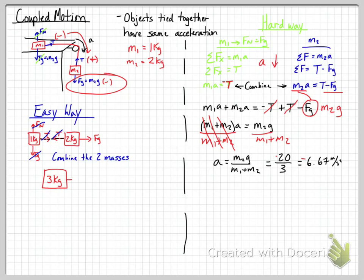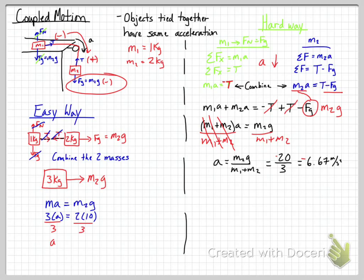With those forces cancelled, we combine the two masses into a 3 kilogram object being pulled by the only remaining force, M2G. So MA equals M2G: the total effective mass is 3, and it equals 2 times gravity for the second mass. Dividing: 3A equals M2G, giving A equals 6.67 meters per second squared — which should be negative. This gives us the same result much more quickly, and we'll do practice problems with these in class.